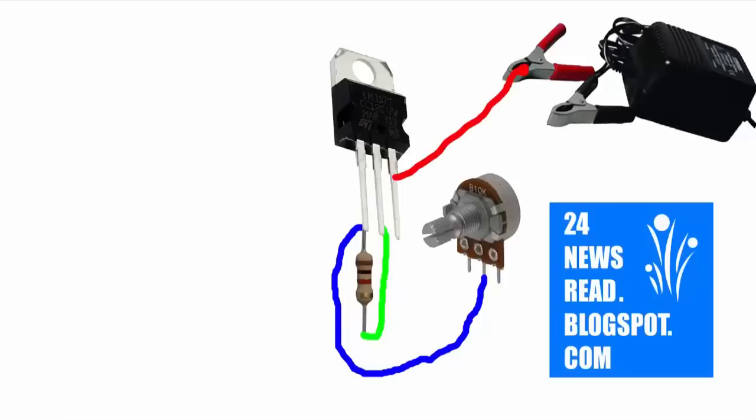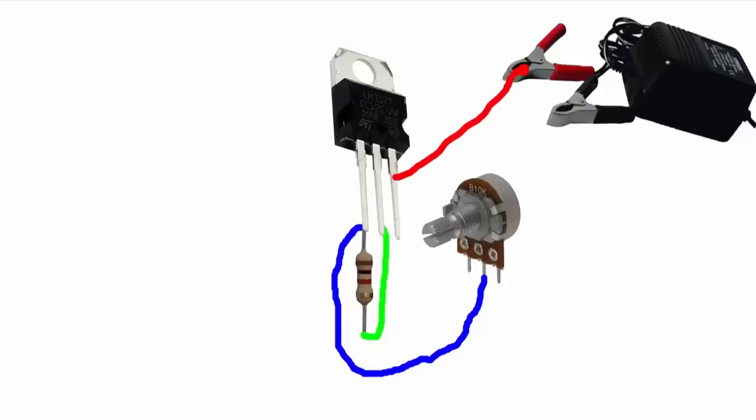Now set the plus position to IC pin 3. Set the minus position to potentiometer pin 1.